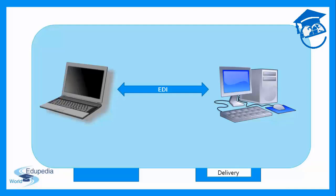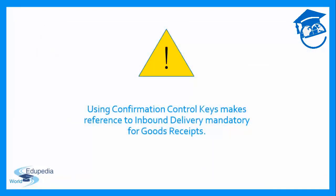Once a purchase order is created, the vendor receives it, confirms it with a shipping notification, and this gives rise to the automatic creation of an inbound delivery document in the buyer's system. An important point: when confirmation control keys are set in the purchase order, it is no longer possible to perform goods receipt based on the purchase order alone. The inbound delivery becomes mandatory for performing goods receipt once confirmation control keys have been used.